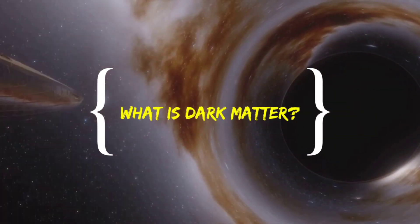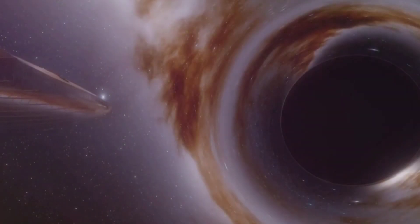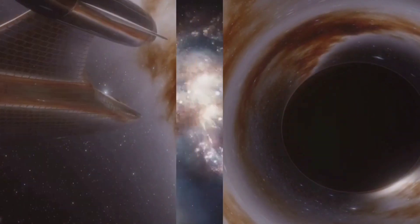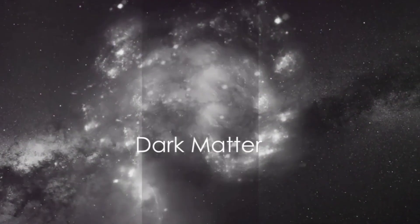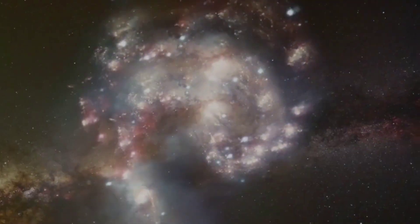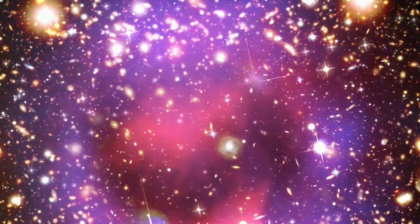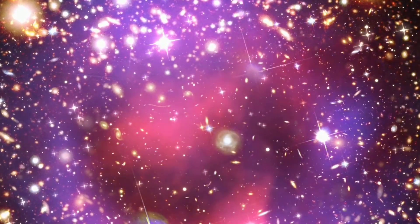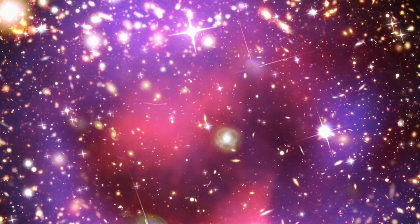What is dark matter? Dark matter is something in space that we can't see because it doesn't give off any light. It's like invisible stuff that's all around us in the universe. We call it dark because it's hidden and doesn't shine like stars or planets.